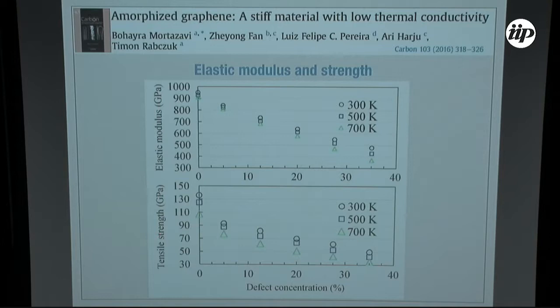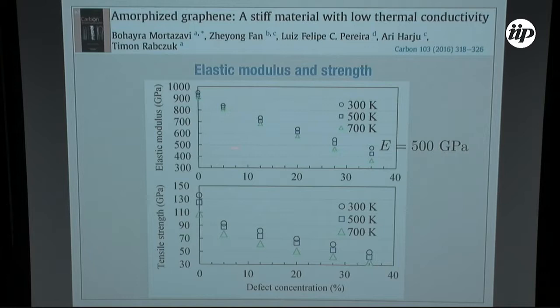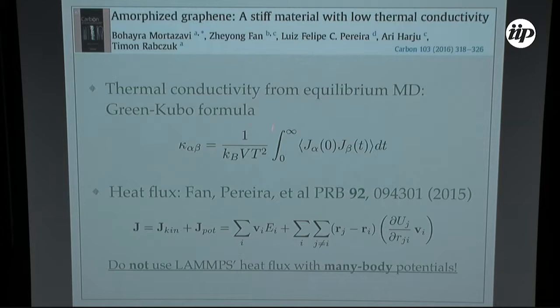We look at the elastic modulus and tensile strength — the stress at rupture — as a function of temperature. For increasing defect concentration, as expected, the elastic modulus is smaller at higher temperature. But still, the elastic modulus for a sample with 35% defects is 500 GPa — this is half of graphene at 1 TPa — so this material is still very, very tough to pull.